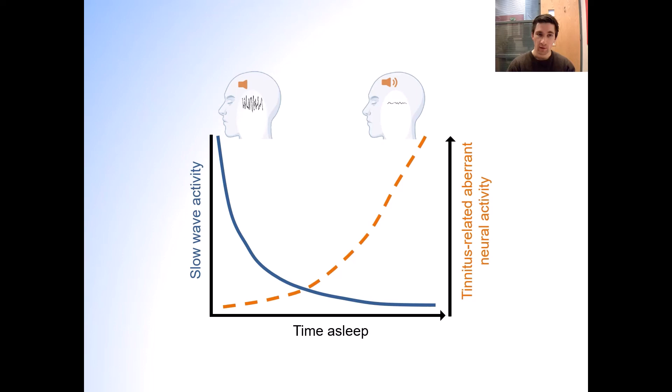Specifically, tinnitus activity might be reduced during intense non-REM sleep, but as sleep pressure decreases and with the drive of the brain to express slow-wave activity, aberrant brain activity could regain its potential to affect the brain on a wide scale as observed during wakefulness in tinnitus patients.